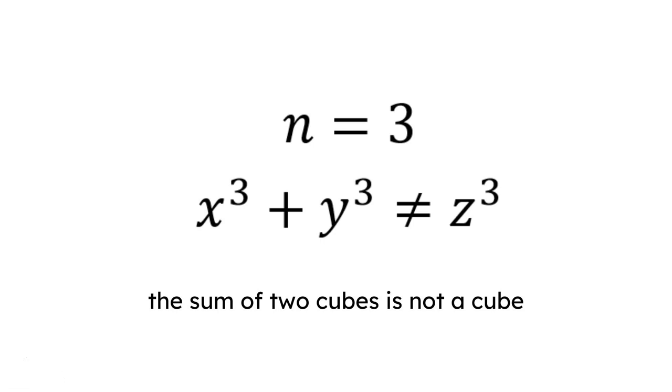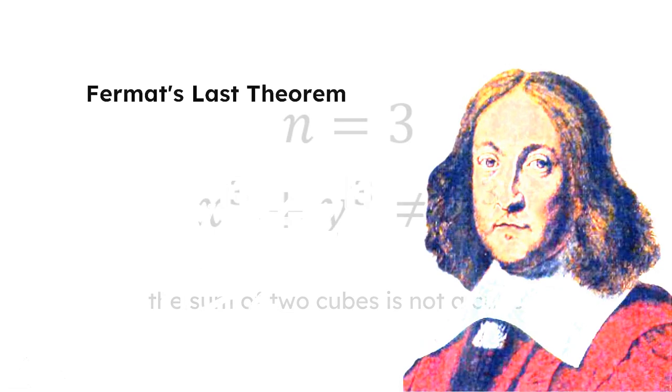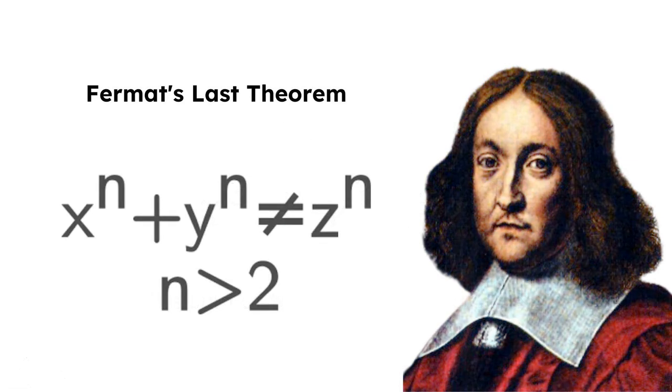For example, if n equals 3, Fermat's last theorem states that no natural numbers x, y, and z exist such that x cubed plus y cubed equals z cubed, which means the sum of two cubes is not a cube.